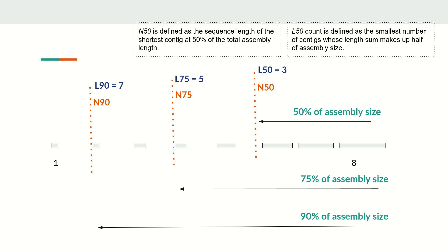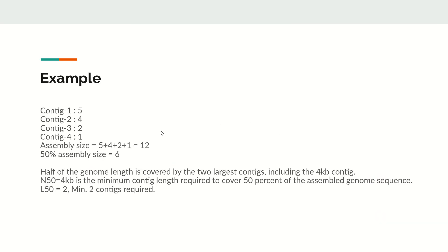Let us look at a concrete example. We have four contigs with lengths 5, 4, 2, and 1, ordered in decreasing order. The total assembly size is 5+4+2+1=12, and 50 percent of that is 6. We check: 5+4=9, which is greater than 6. So contig 1 and contig 2 together reach 50 percent. Therefore N50 equals 4 — the shortest of those two contigs — and L50 equals 2.